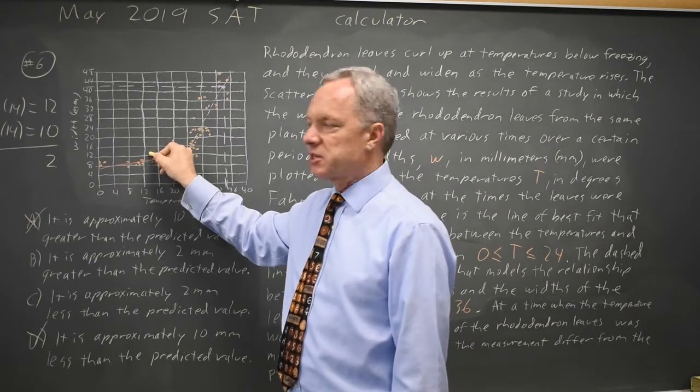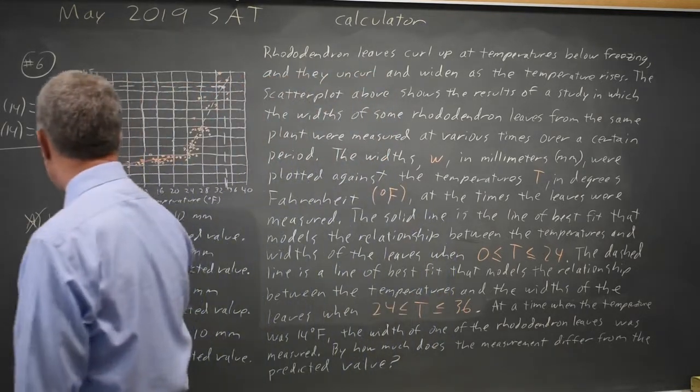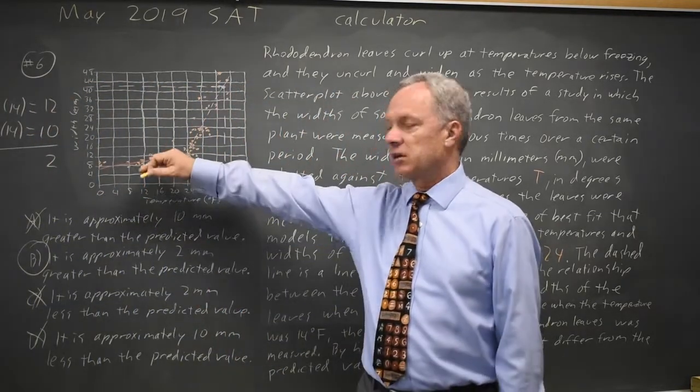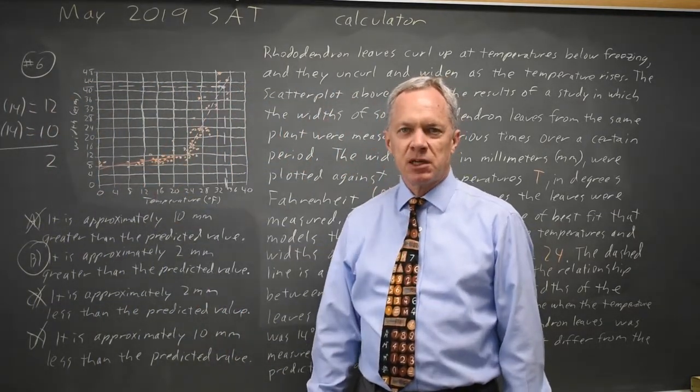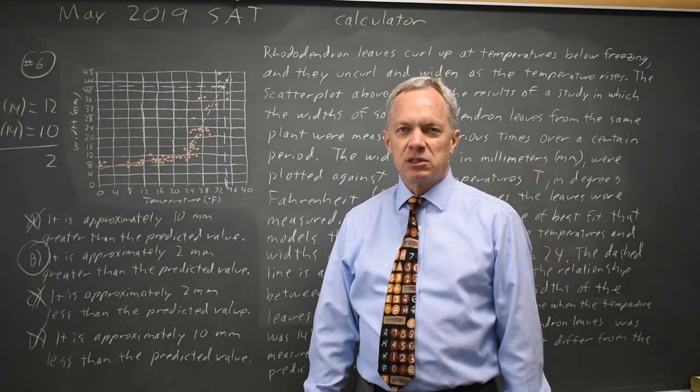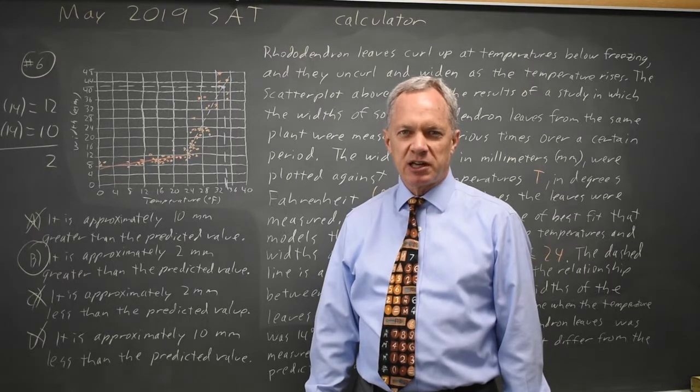Since the measurement is above the line of best fit, that would be choice B, greater than, not choice C, where the measurement would be less than or below the line of best fit. College Board often asks you to interpret the actual observations compared to the line of best fit.